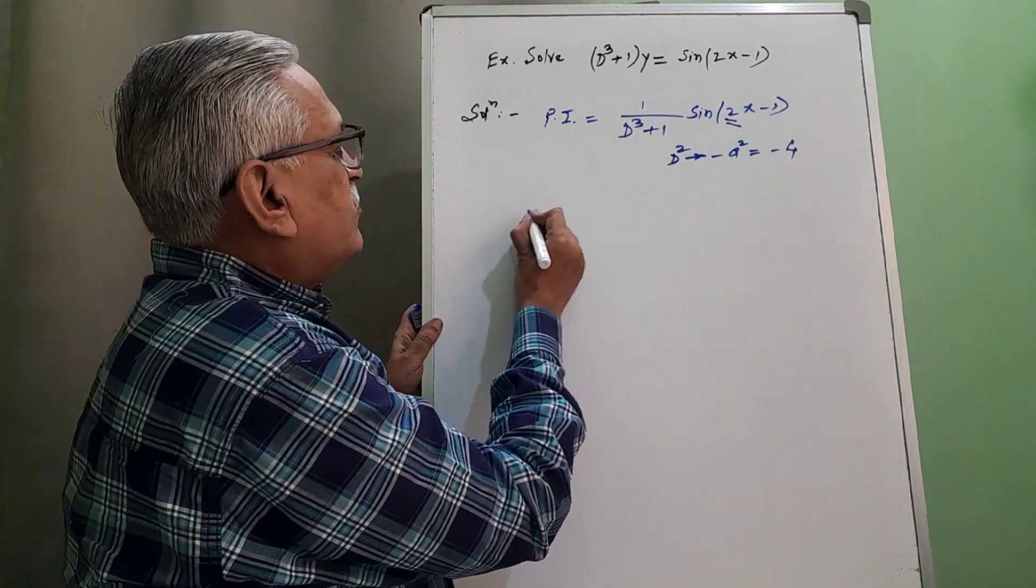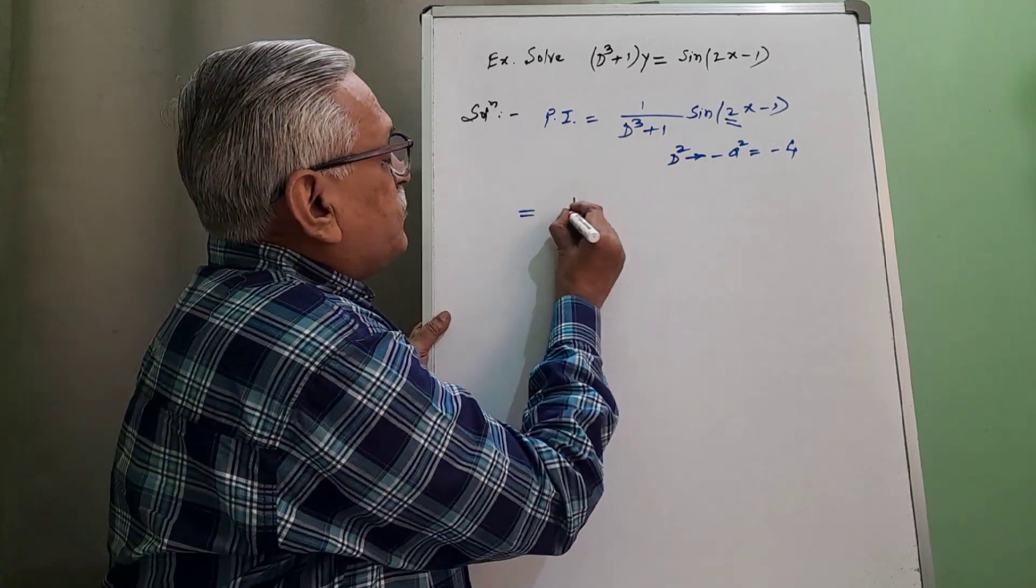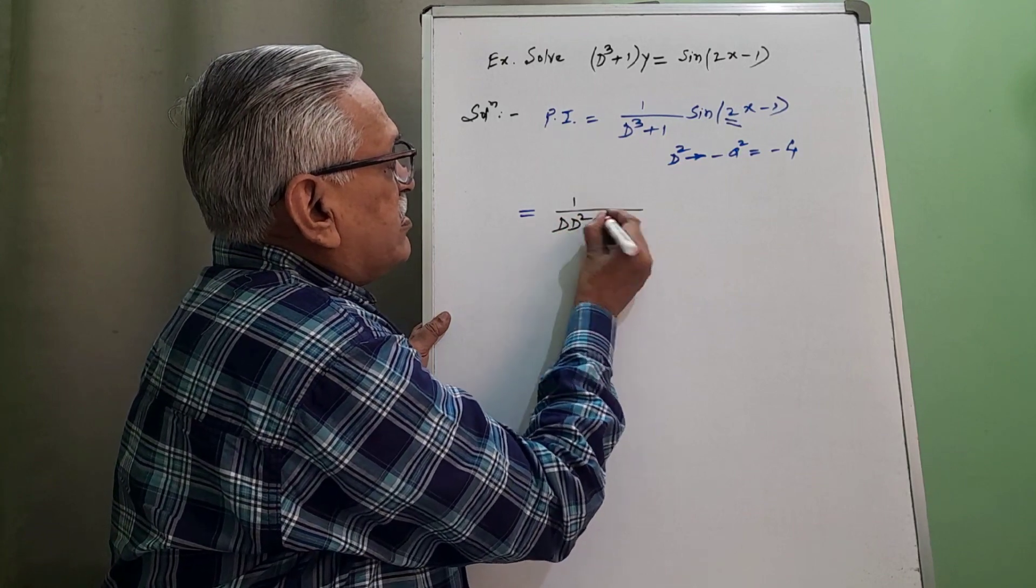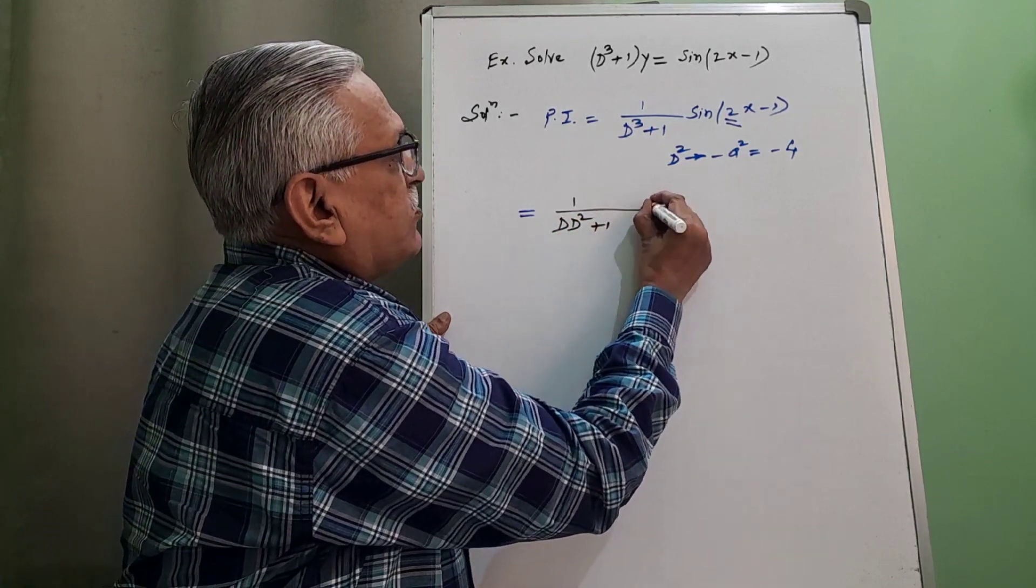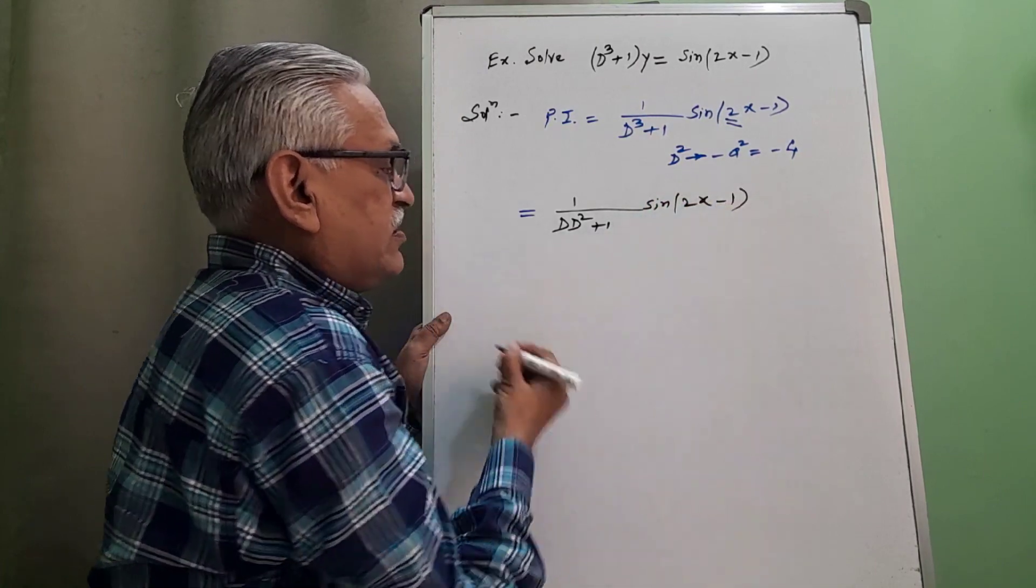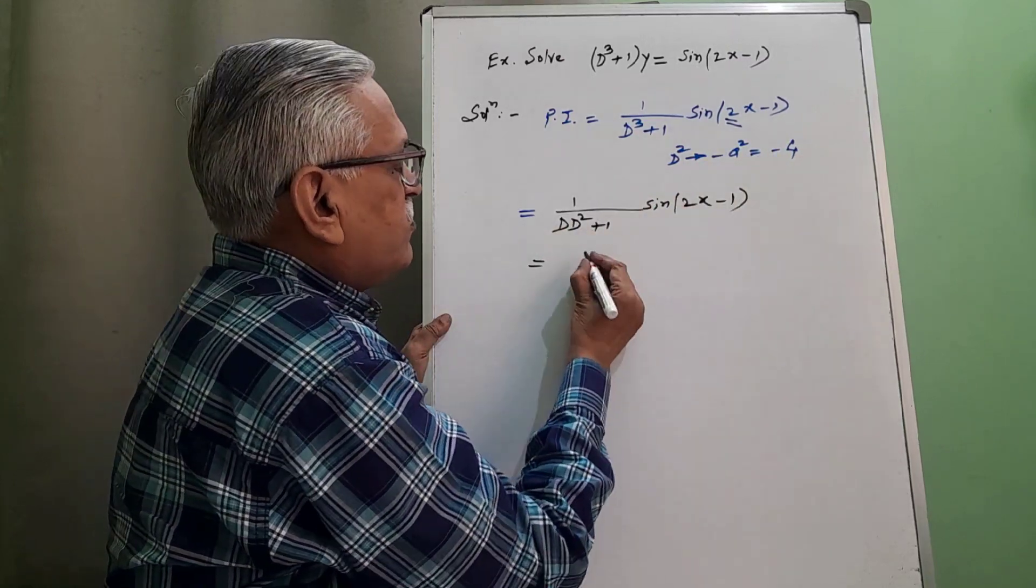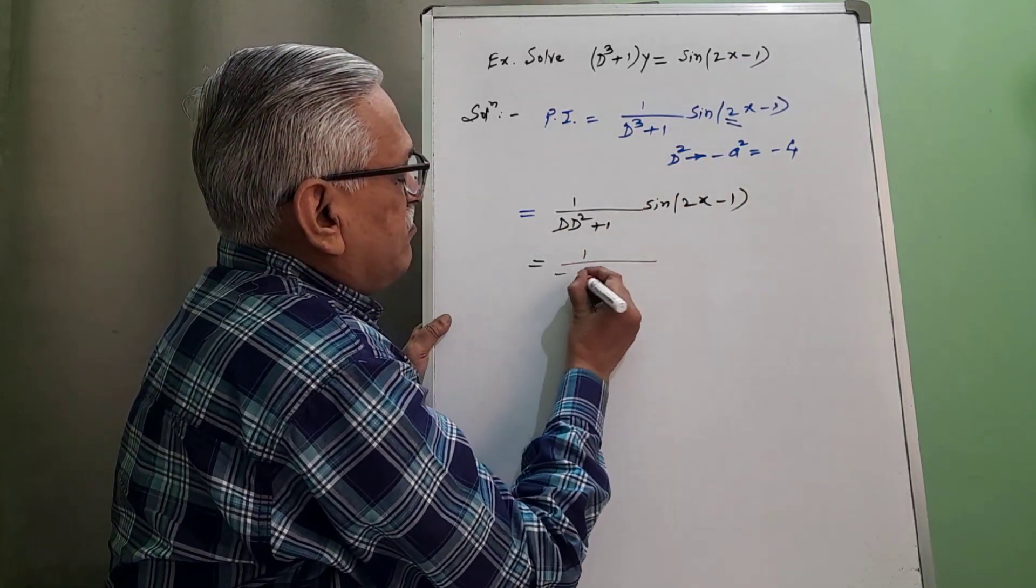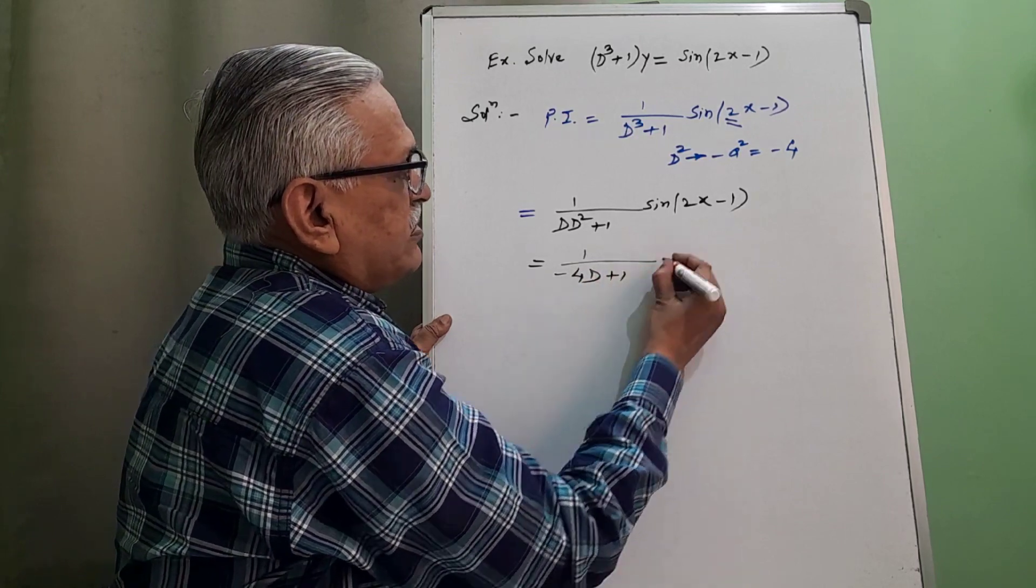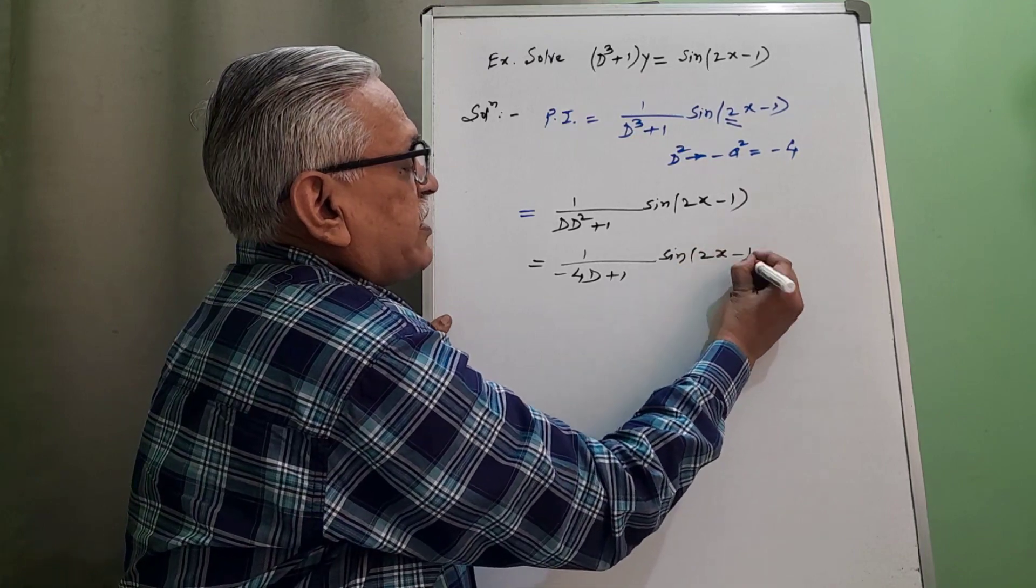It is minus, a is here 2, coefficient of x, therefore 2 square is 4. Therefore replace d square by minus 4. We have here the term is d cubed, that d cubed term we can rewrite as d into d square plus 1 operated on sin of 2x minus 1. Replacing d square by minus 4, we have 1 upon minus 4d plus 1 into sin of 2x minus 1.